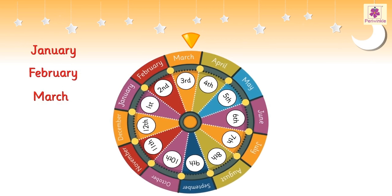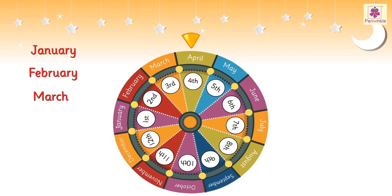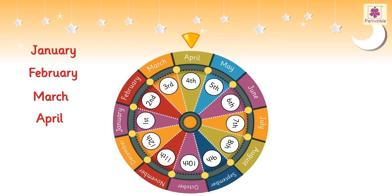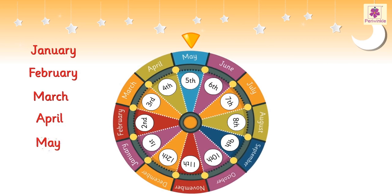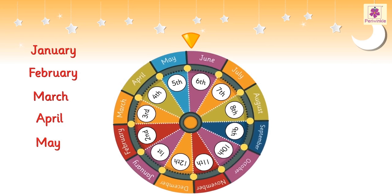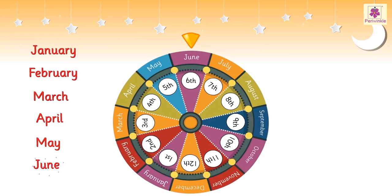The fourth month is April. The fifth month is May. The sixth month is June.